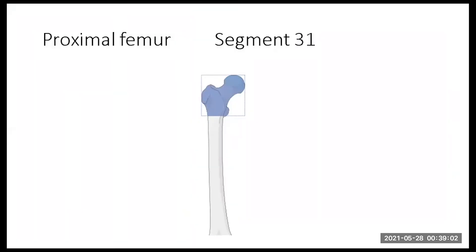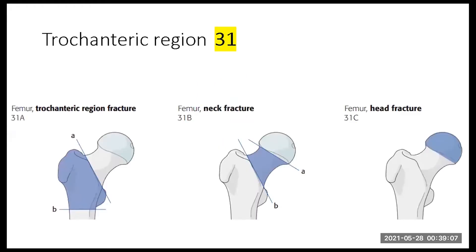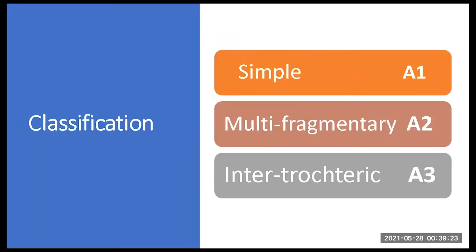The proximal femur is segment number 1, and if you look at the proximal femur, the fractures are divided into A — which is a trochanteric fracture — B is a neck fracture, and C is a head fracture. A1 is a simple trochanteric fracture, A2 is multifragmentary, and A3 is an intertrochanteric. Now let's look further into that.